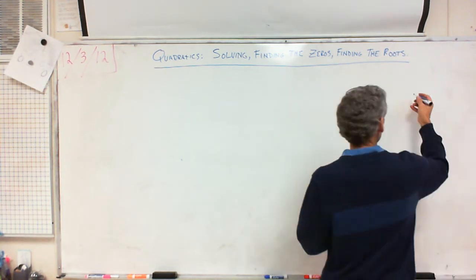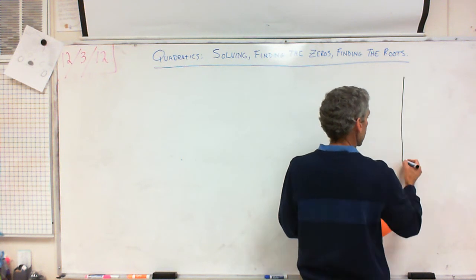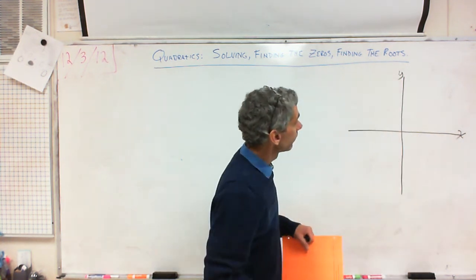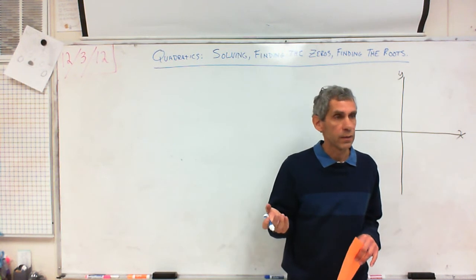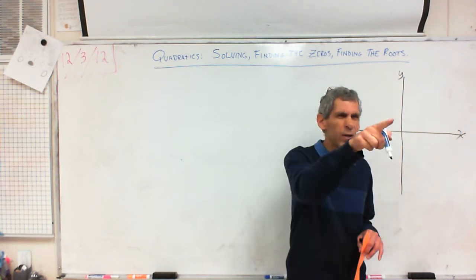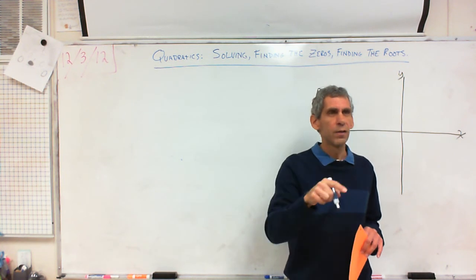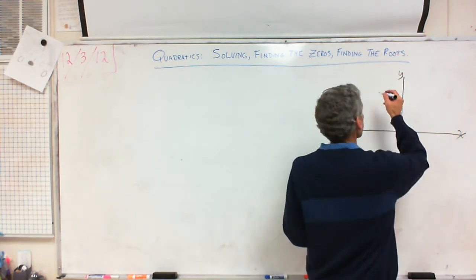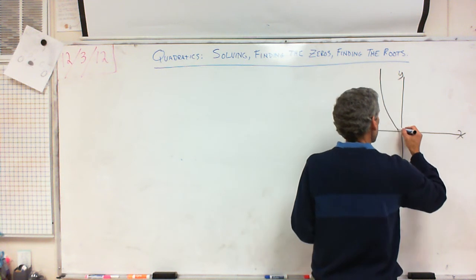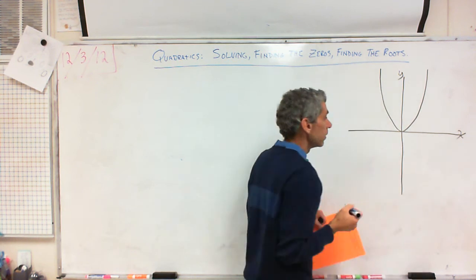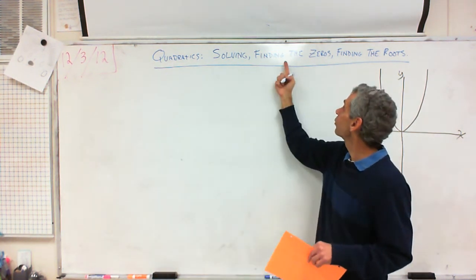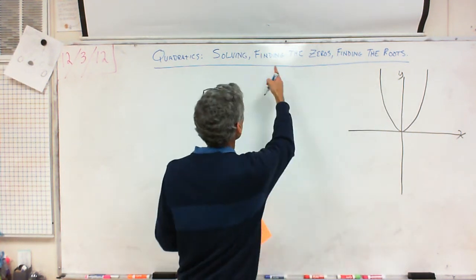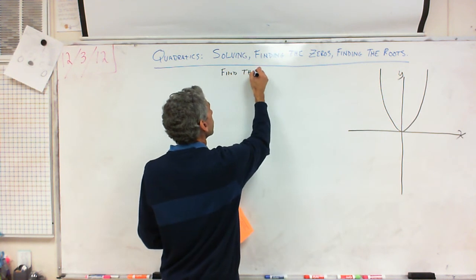You are trying to find, if you graph a quadratic equation — what does a quadratic equation look like? It's a parabola, right? Like y equals x squared. It came down to zero and then came back up again. So when they ask you to solve, or find the zeros, or find the roots, they're asking you to find the x-intercepts. Solve, find the zeros, find the roots — that all means find the x-intercepts.